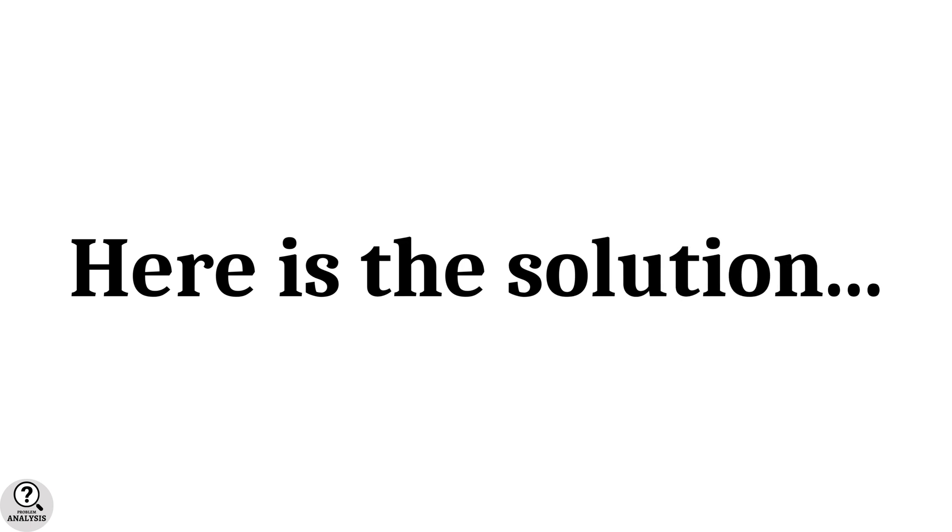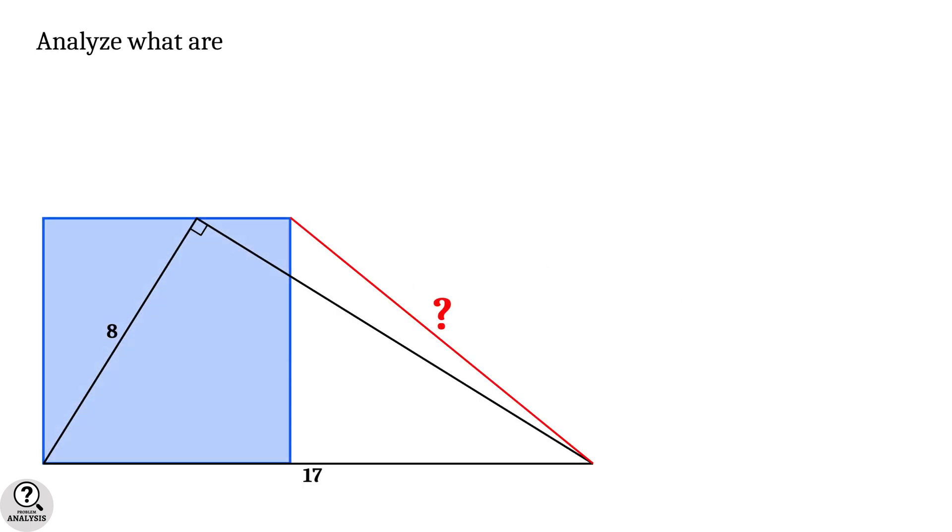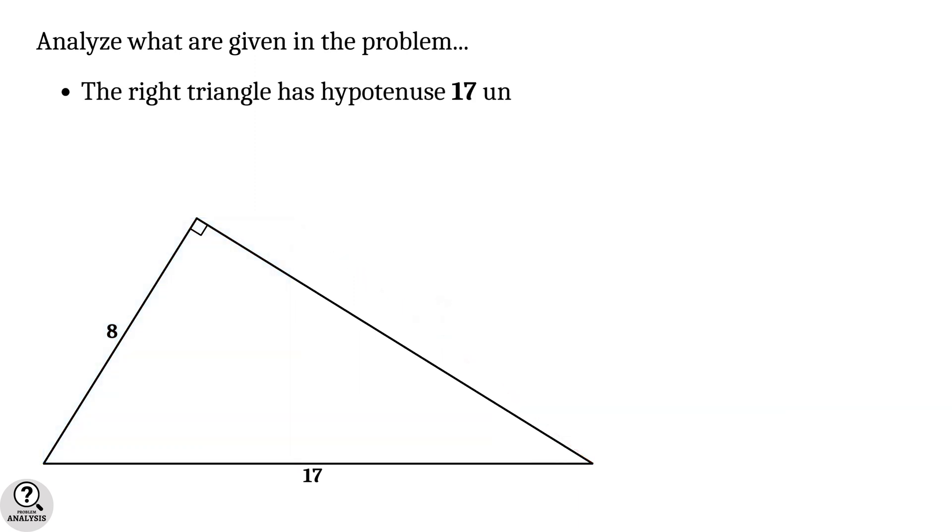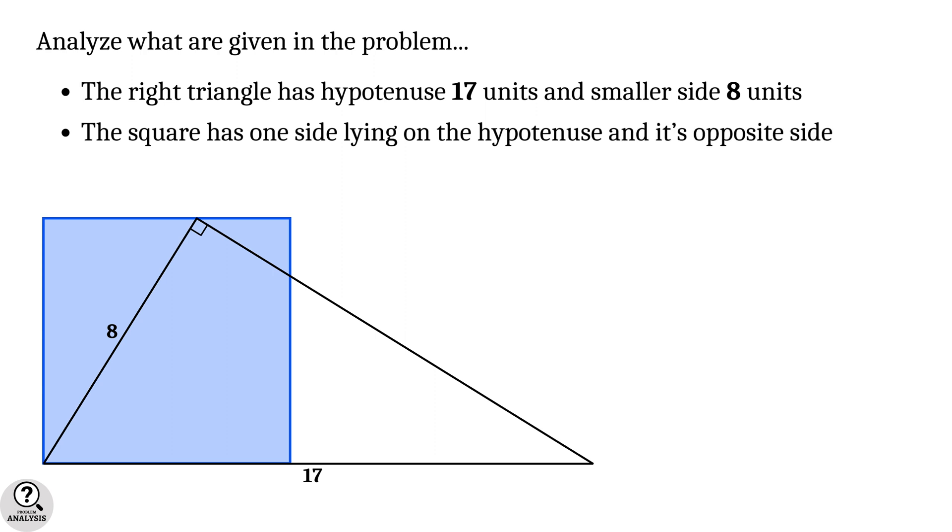And the solution is right here. First, let's analyze what are given in the problem. The right triangle has hypotenuse 17 units and the smaller side is 8 units. And then, the square has one side lying on the hypotenuse and its opposite side is passing through the right angle corner.